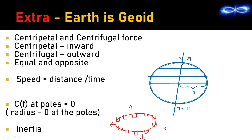Suppose one molecule takes 10 hours to complete a rotation. All molecules must also take 10 hours, otherwise the shape would be damaged. Using the formula: speed = distance/time, and since time is fixed at 10 hours, speed will be maximum at the equator and minimum at the poles. So the equatorial molecule moves very fast and the polar molecule moves very slowly.